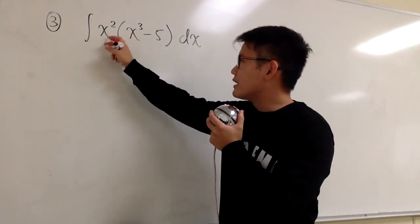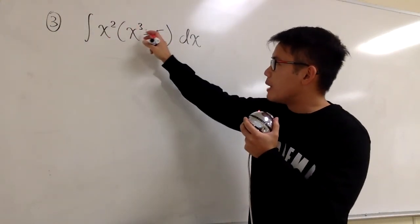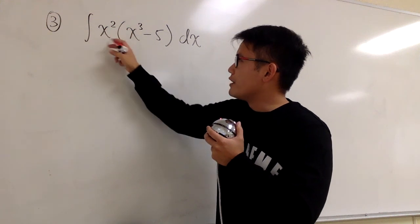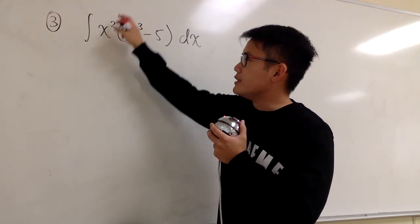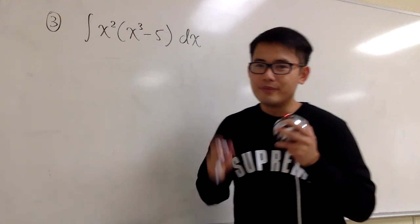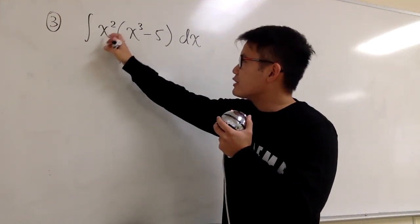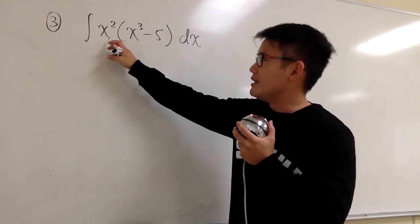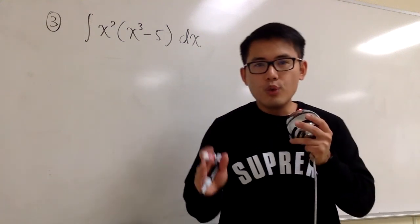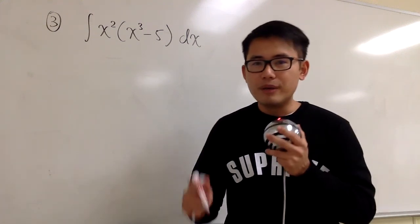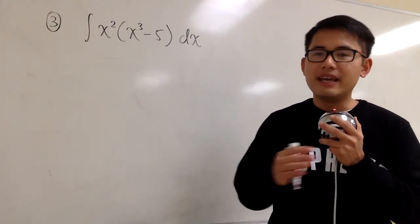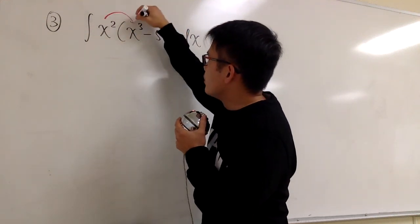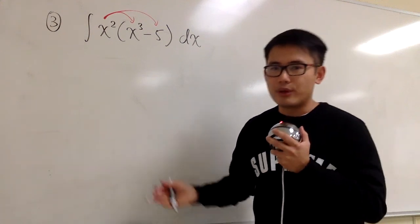Here's the third one. We have the integral of x to the second power times the parentheses with x to the third power minus 5 inside, dx. Can we just do the reverse power rule right here and say this is x to the third power divided by 3? No, we cannot, because this x to the second power is affected by x to the third power — we have to multiply out. In order to use the reverse power rule, we have to make sure that term is not going to be affected by anything else. So we need to do the algebra first: multiply x squared into the parentheses.